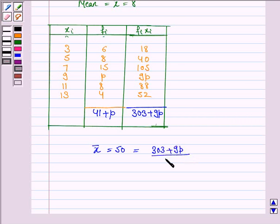Now we have summation fi xi upon summation fi, which is 41 plus p. So this implies (41 plus p) times 50 equals 303 plus 9p.